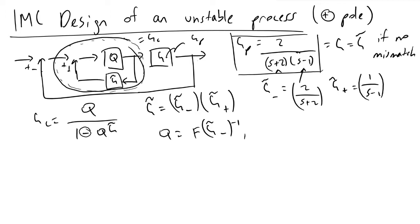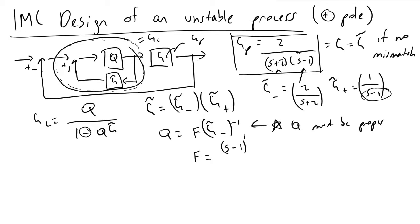In this case, Q must be proper — meaning the degree of the denominator must be greater than or equal to that of the numerator, and there can't be any positive poles. So we're going to let our filter F include S minus 1 in the numerator to cancel the unstable pole, and raise (λS+1) to the second power in the denominator of our filter.